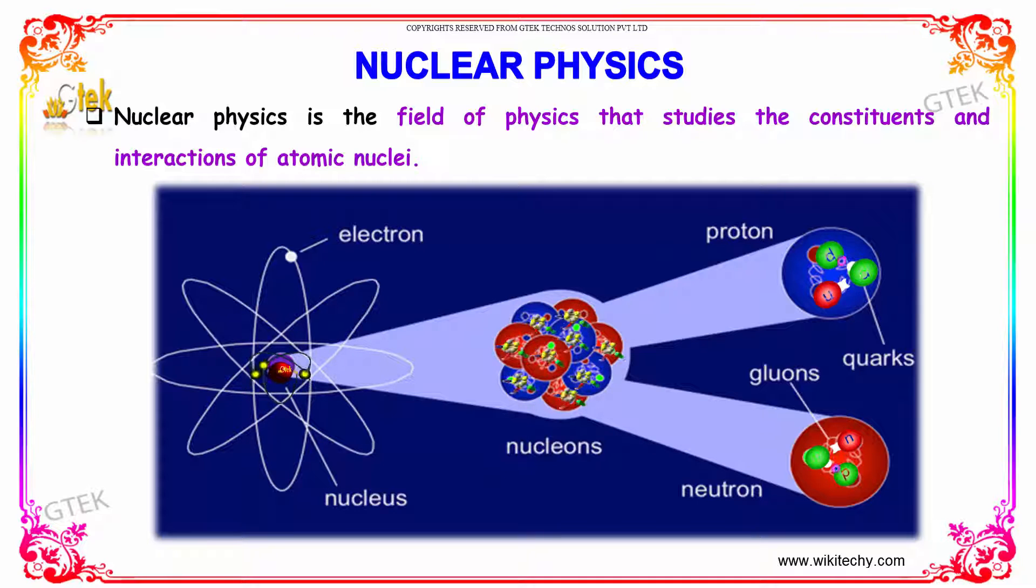You are able to see the atom with the electrons, which is revolving around a center part that's nucleus. This nucleus is nothing but nucleons, which is subdivided into proton and neutron. The proton is created and made by the element called quarks and the neutron is created by gluons.